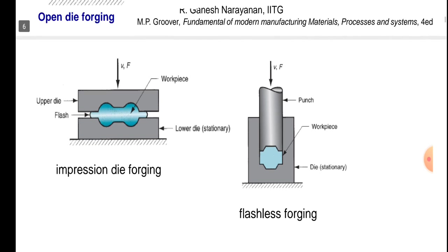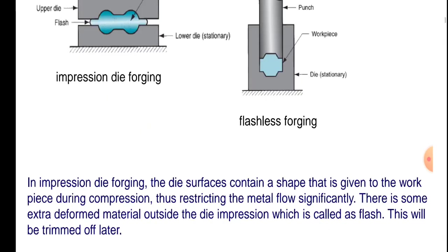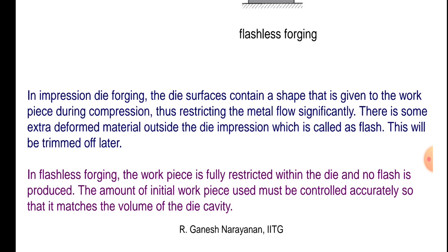In impression die forging, the upper die and lower die have the work piece between them. A force F is applied with velocity V. The die surfaces contain a shape that is given to the work piece during compression, thus restricting the metal flow significantly.